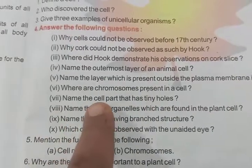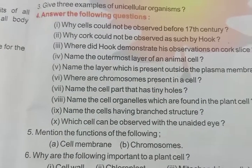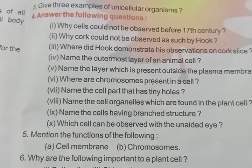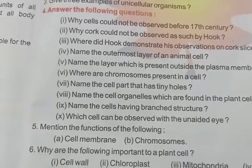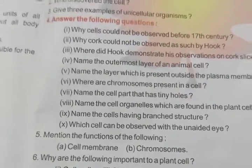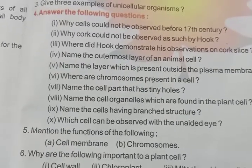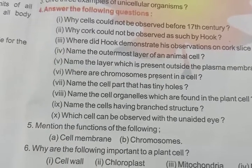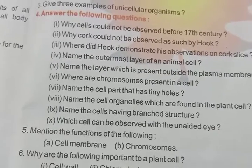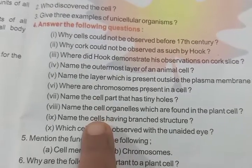Name the cell organelle which is found only in plant cells. Mitochondria, ribosomes, and lysosomes are all found in both plant cells and animal cells. But there is an organelle which is only in plant cells, called chloroplast. It is because of chloroplast that plant cells have chlorophyll. So the answer for this is chloroplast.